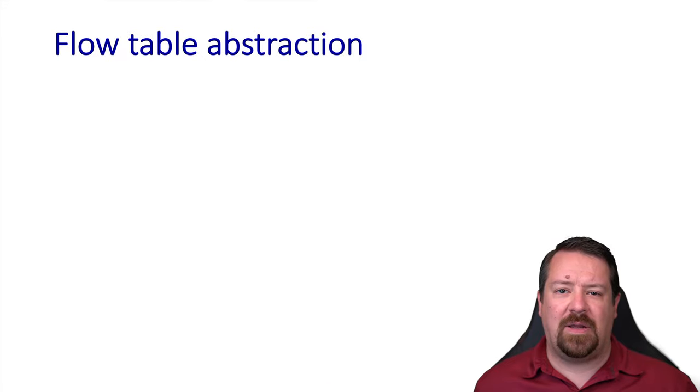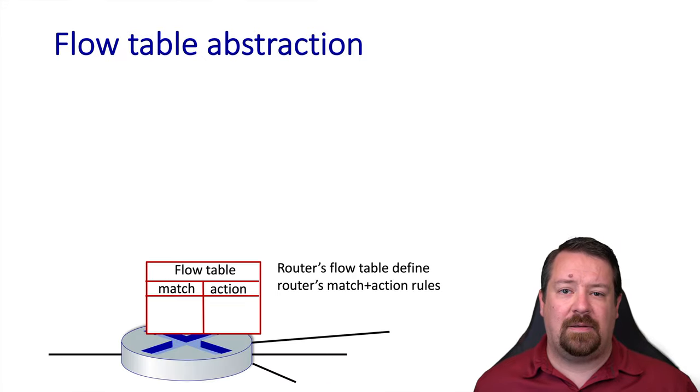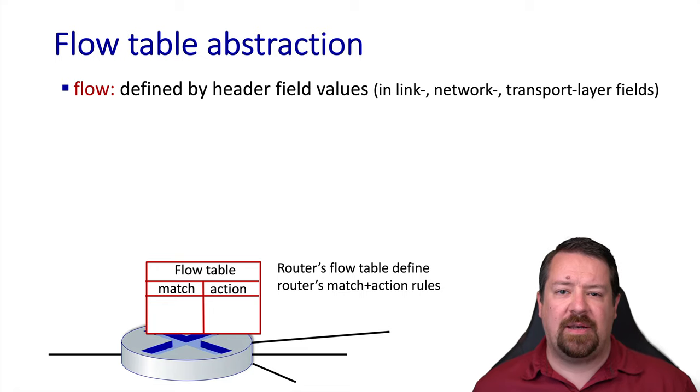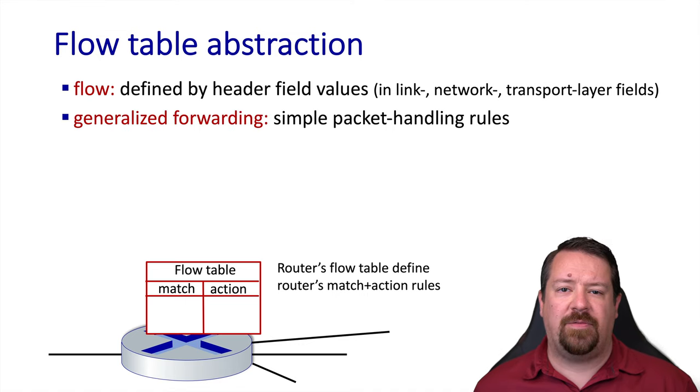Let's look at our flow table in a little more detail. As we've said, these are pairs of matches and actions. A flow is a particular set of header field values. Note that in practice these are drawn from both the network layer header and the transport layer header.